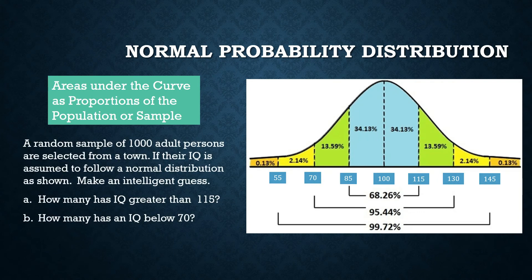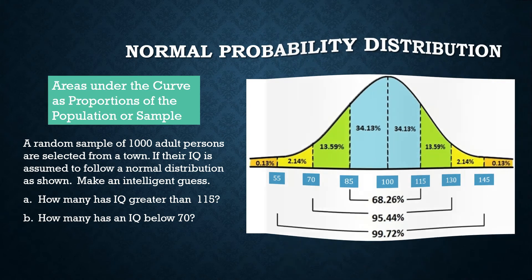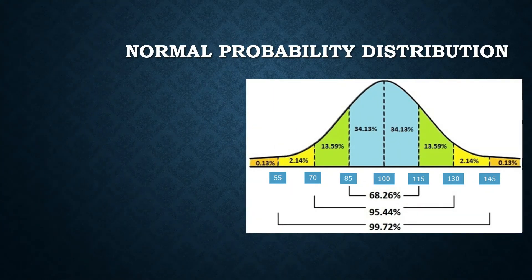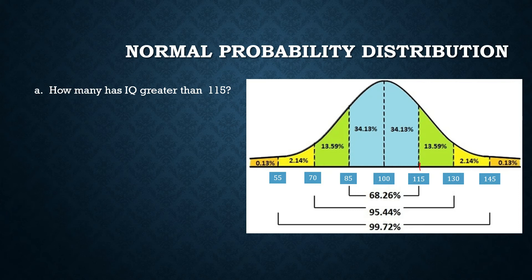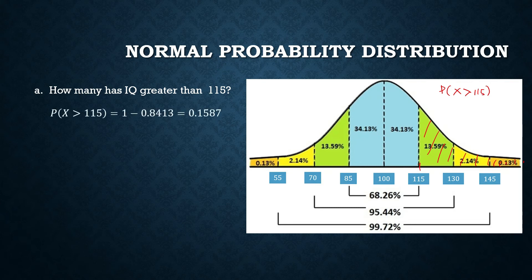A random sample of 1,000 adult persons is selected from a town. Assuming their IQ follows a normal distribution, how many have an IQ greater than 115? First, we find the proportion of the population with IQ greater than 115 by getting the area under the curve to the right of 115, which equals 0.1587.